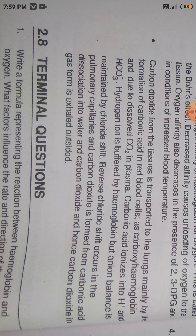Carbonic acid ionizes into H+ and HCO3-. The hydrogen ions are buffered by hemoglobin, but ionic balance is maintained by the chloride shift. Reverse chloride shift occurs in the pulmonary capillary, and carbon dioxide is formed from the dissociation of carbonic acid into water and CO2. Hence, carbon dioxide in gas form is exhaled outside.